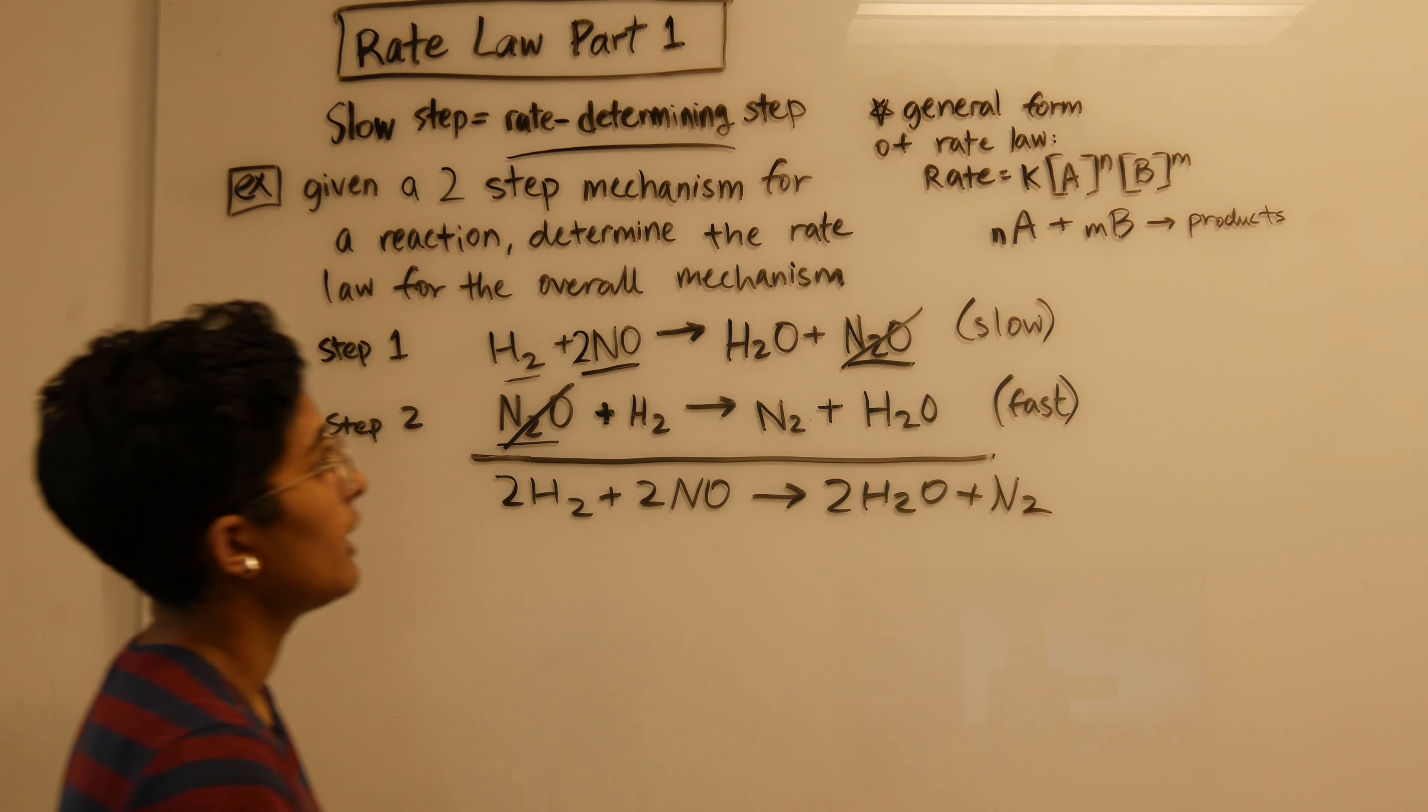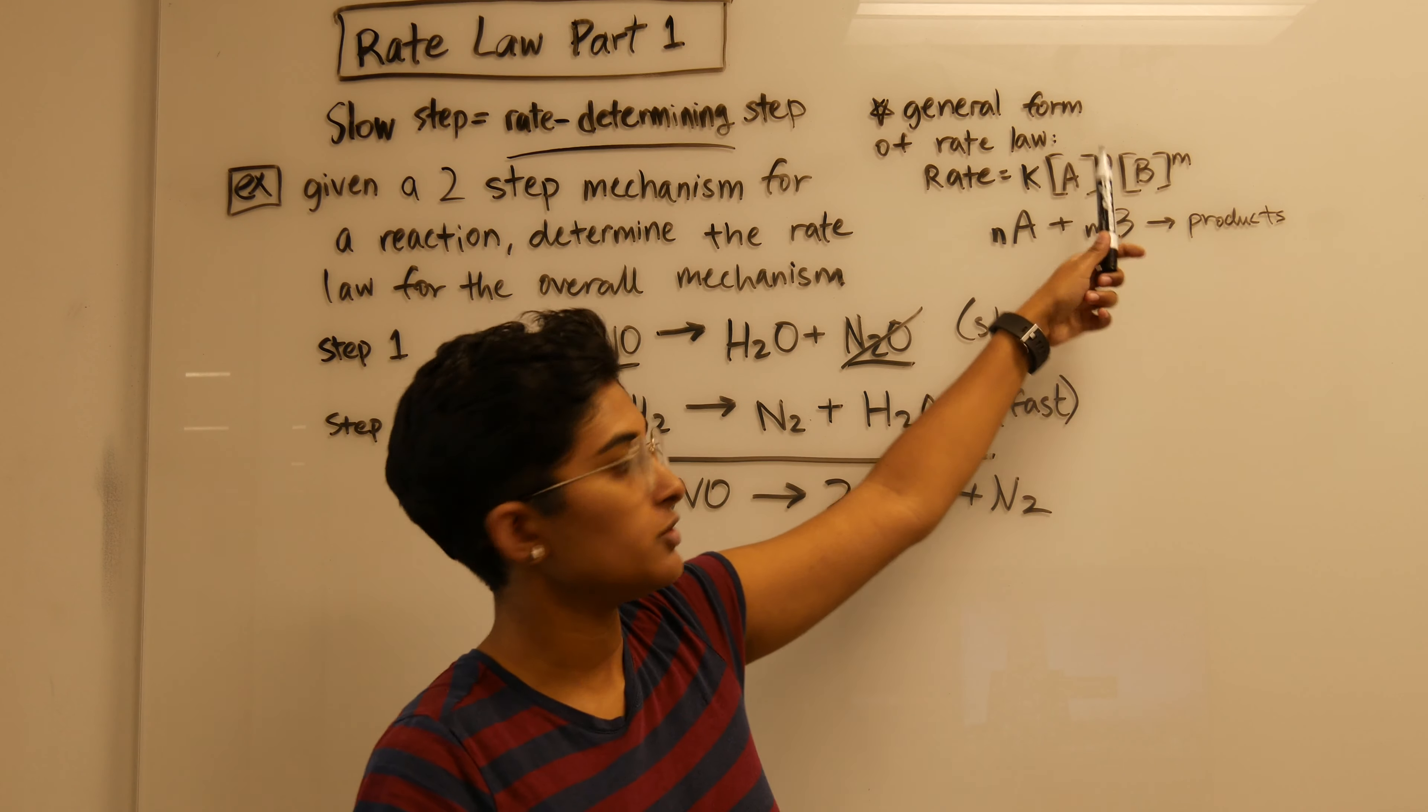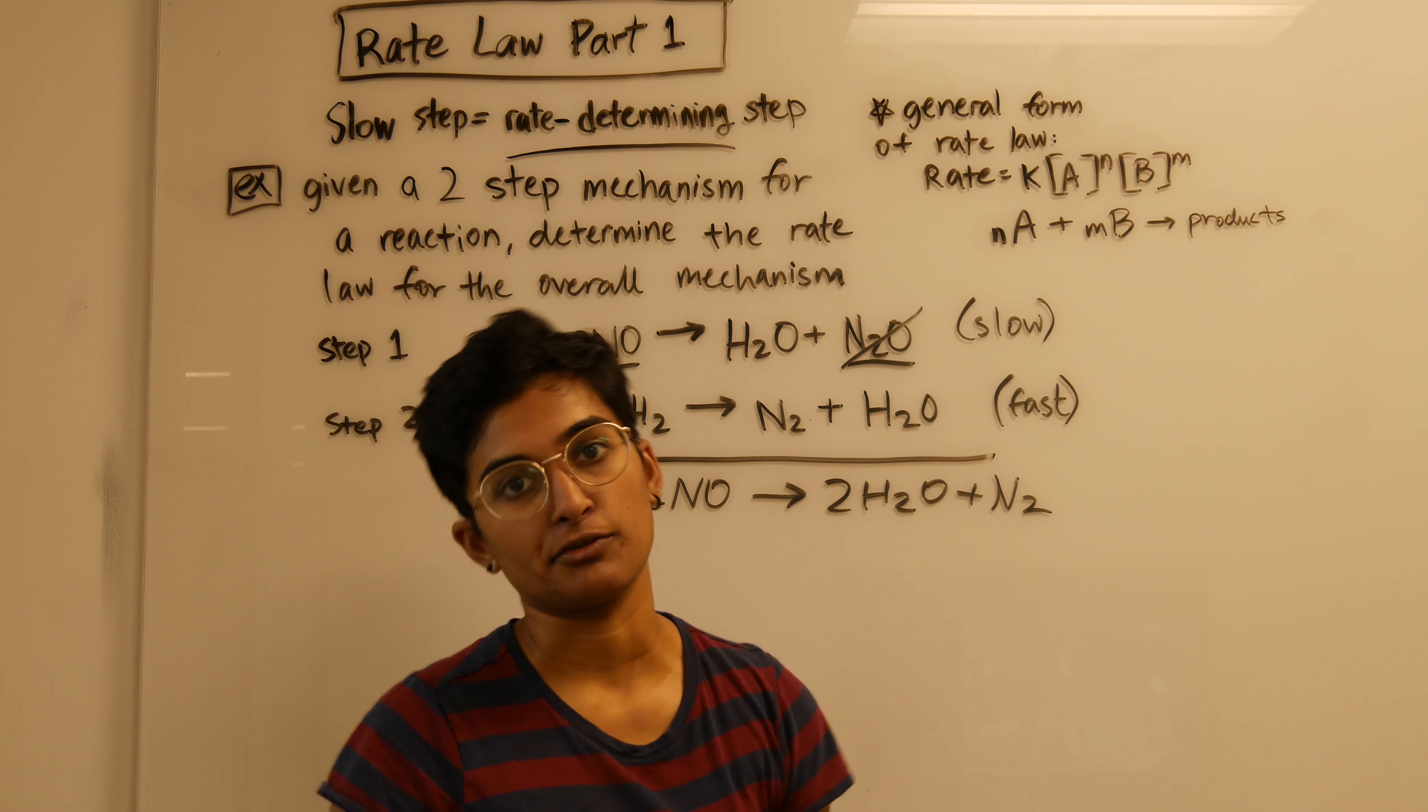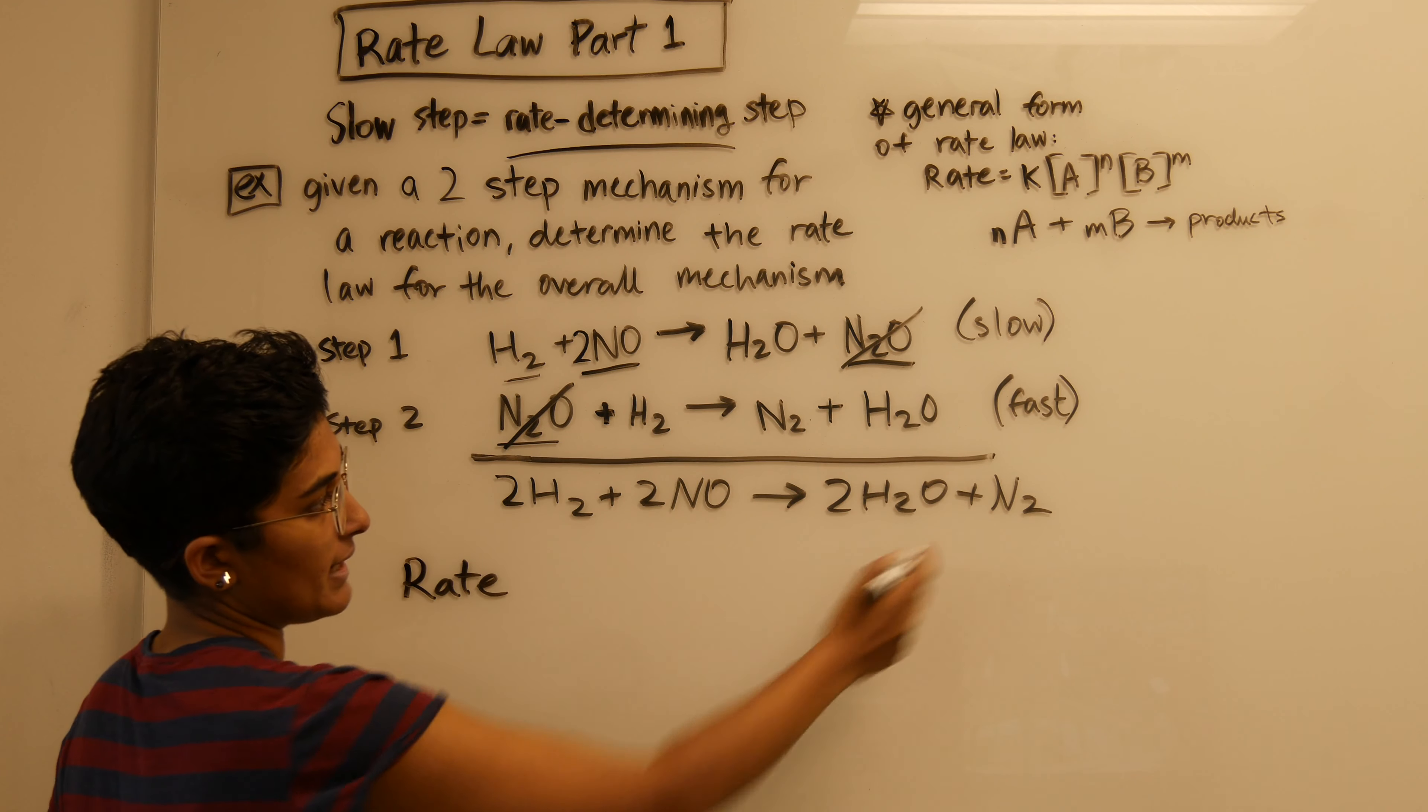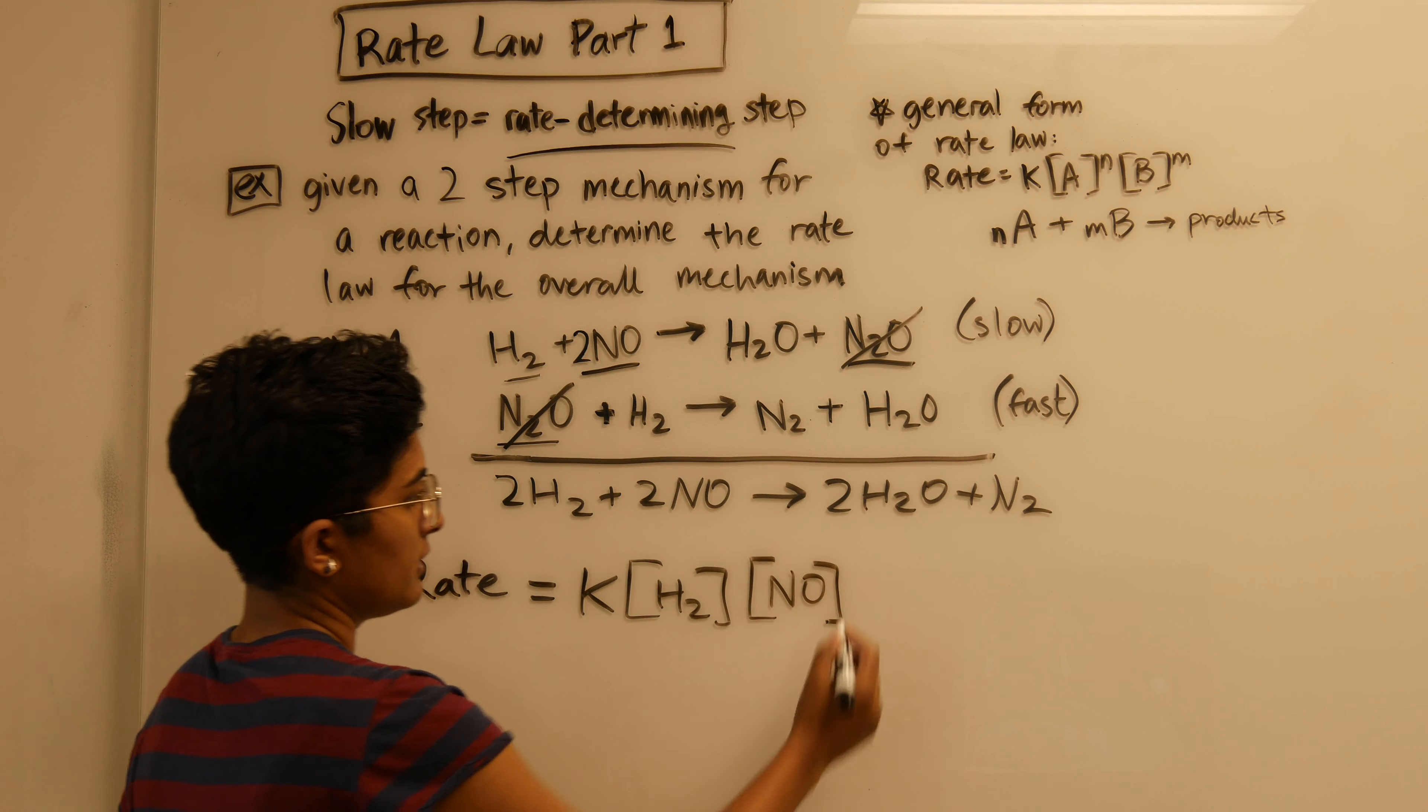The general form of a rate law looks like this: rate equals K times one of the reactants to its exponent and then times the other reactant to its exponent. In this case it would be rate equals K times H2 times NO, based on the slow step.